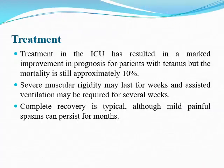Such cases should be managed in the intensive care unit. ICU admission, supportive care, and nursing care are the mainstay of management, and have reduced mortality to 10%. In adults, severe muscle rigidity may last for weeks and assisted ventilation may be required for several weeks. Complete recovery is typical, although mild painful spasms can persist for months.